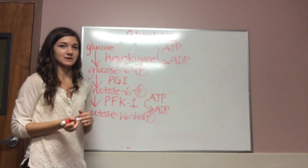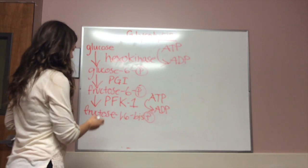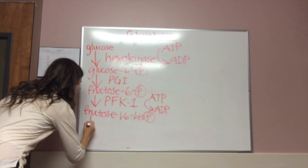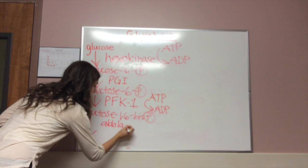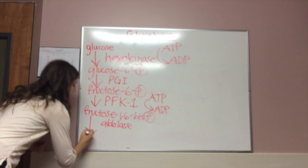We now have a sugar that is ready to be cleaved into 2 phosphorylated trioses. This occurs in reaction 4. Aldolase splits fructose 1,6-bisphosphate into